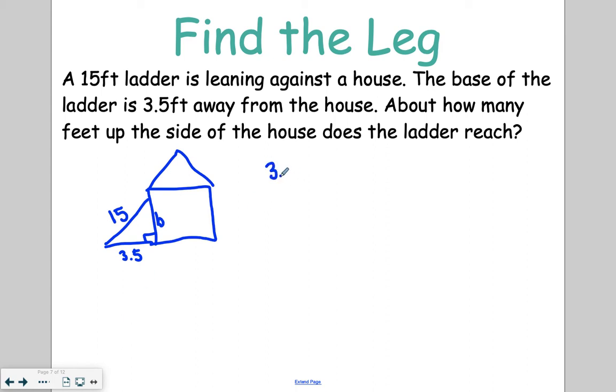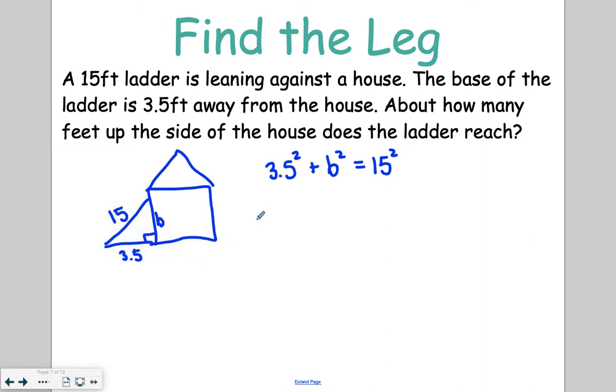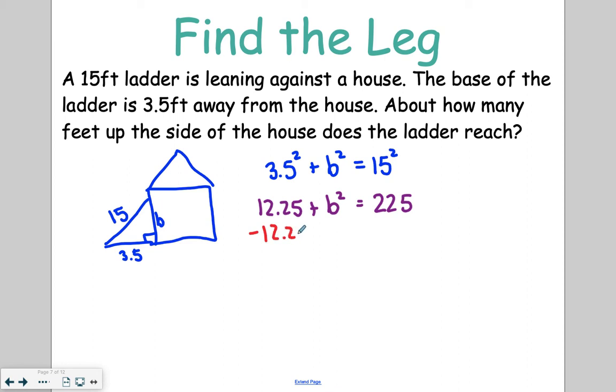So when we're setting up this problem, I'm going to say 3.5, which I'm going to say is A squared, plus B squared, is equal to my hypotenuse of 15 squared. Again, you want to go ahead and solve those exponents. So when I do 3.5 squared, I'm going to get 12.25, plus B squared, is equal to 225. Then in order to isolate that variable to get B squared by itself, I'm going to have to subtract 12.25 from both sides of my equation. When I do that, I get that B squared is equal to 212.75.